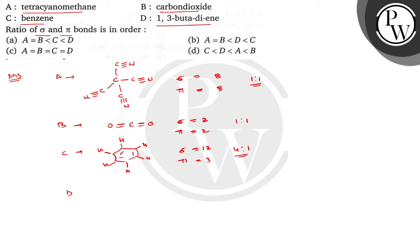In case of D, 1,3-butadiene, it is CH2 double bond CH, CH double bond CH2. This is 1,3-butadiene where the number of sigma bond is 1, 2, 3, 4, 5, 6, 7, 8 and 9. And the number of pi bond is 2. So the ratio is 9 is to 2. So this is 4.5 is to 1.